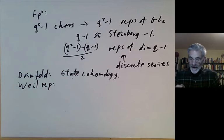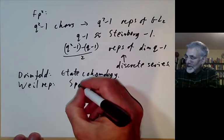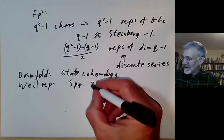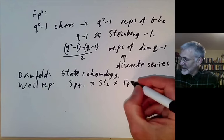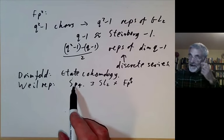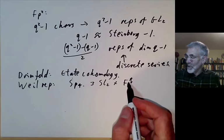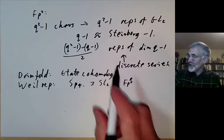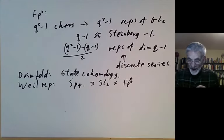Another popular way is using the Weil representation: you take a Weil representation of a bigger group like a symplectic group for a four-dimensional vector space. This symplectic group contains SL2 × F_{p²}*, and you decompose the Weil representation into representations of SL2 times representations of F_{p²}*. This gives a correspondence between representations of these two groups. The piece corresponding to the trivial representation has dimension q rather than q−1, essentially being the full Steinberg representation.